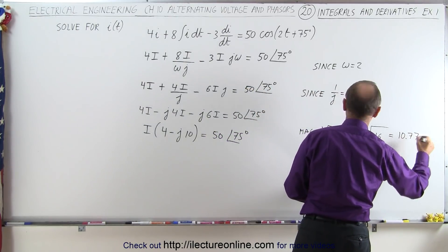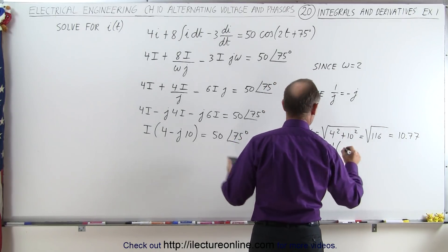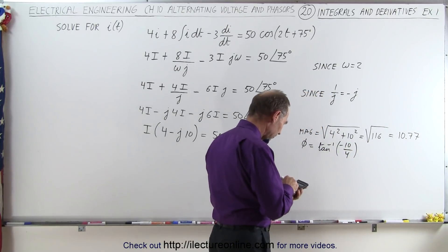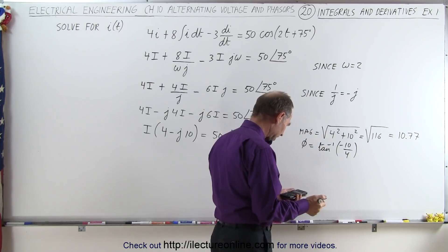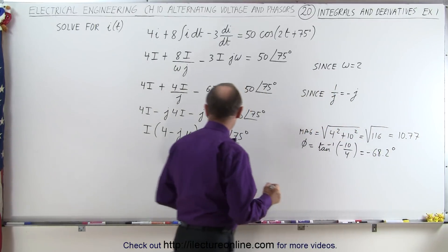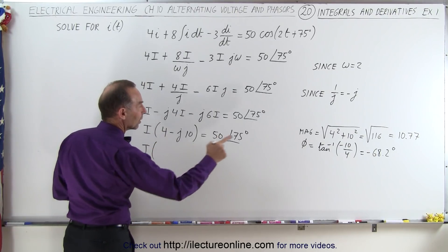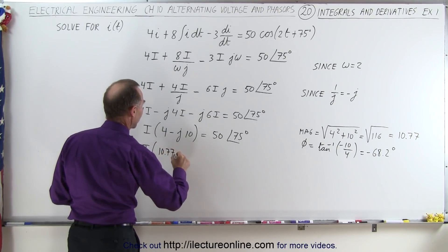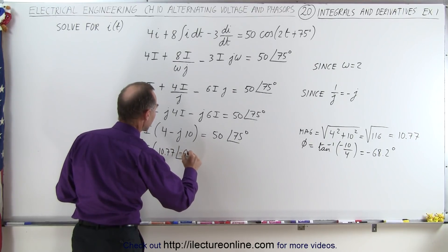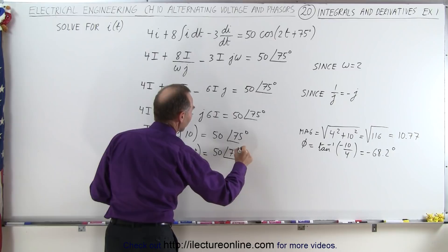And the phase angle, phi, would be equal to the inverse tangent of the imaginary part, which is minus 10, over the real part, which is 4. So 2.5, negative, take the inverse tangent, that gives us an angle of minus 68.2 degrees. All right, so we plug that in here, so we have the current i times 10.77 for the magnitude and a phase angle of minus 68.2 degrees. And that is equal to magnitude of 50 and a phase angle of 75 degrees.